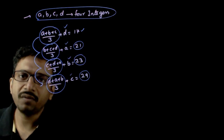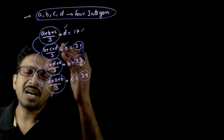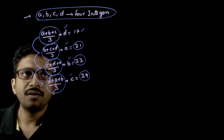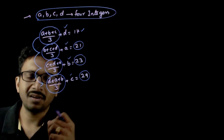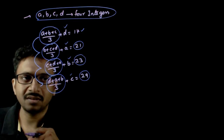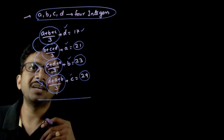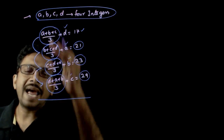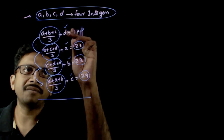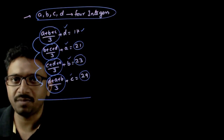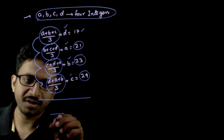Now, from these four equations, can you solve for a, b, c, d? You have four equations and four variables, so you can solve them. But how we do it is critical in this question. What I do is, instead of solving directly, I will add all these equations. If I add all these equations, you have a plus b plus c plus d, and for these four expressions the denominator is three, so you have a common denominator of three.